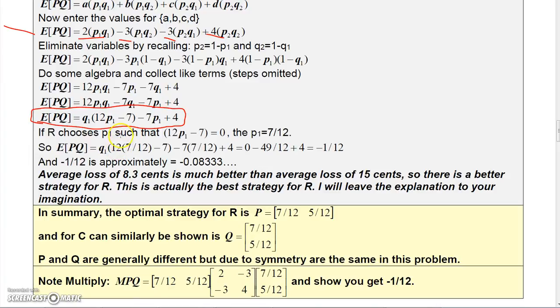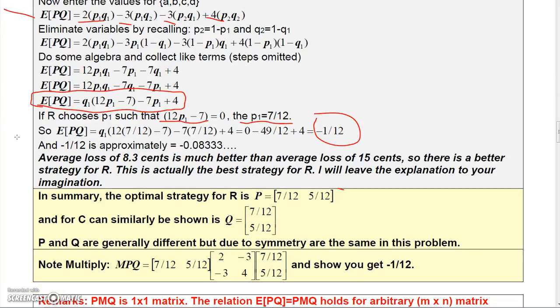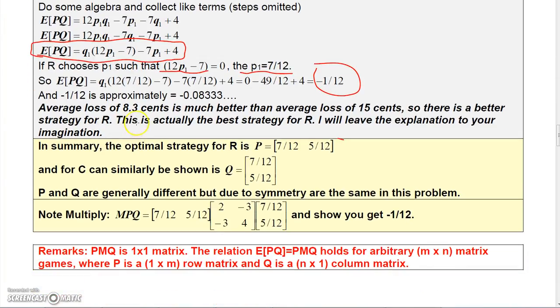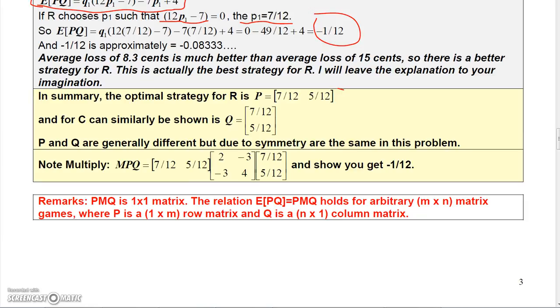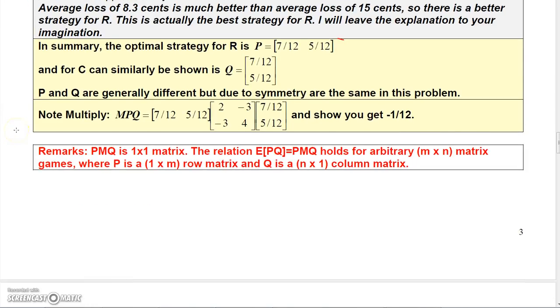Now, you can see that if R chooses P1 such that 12P1 minus 7 is 0, then P1 would be 7 twelfths. So if you were to plug that in, and so if we let P1 be 7 twelfths, of course that would mean P2 is 5 twelfths, if we plug that into the expected value, then we could get that the expected value is negative one twelfth. Now that's approximately losing eight cents. So that actually is better than losing 15 cents on average. So an average loss of 8.3 cents is better than an average loss of 15 cents. And it turns out that is the best strategy.